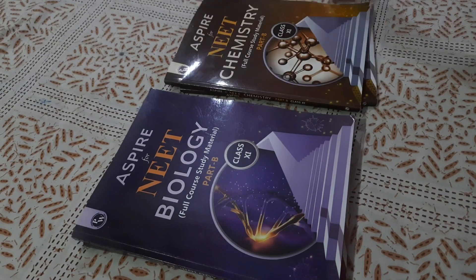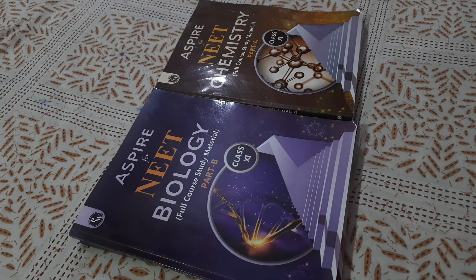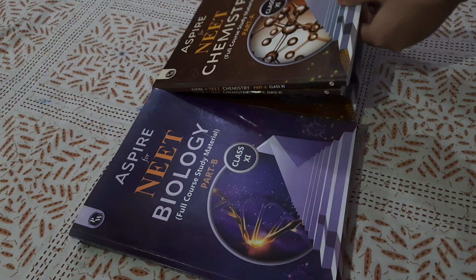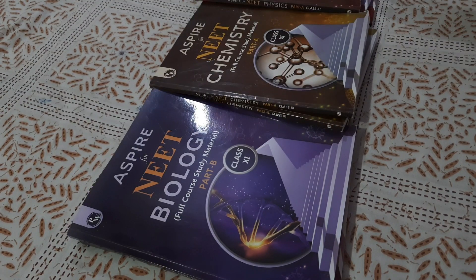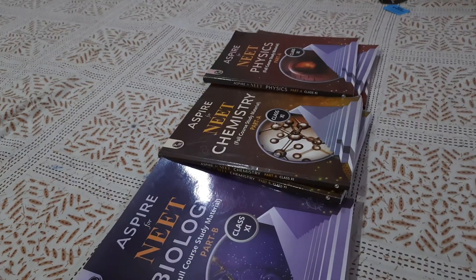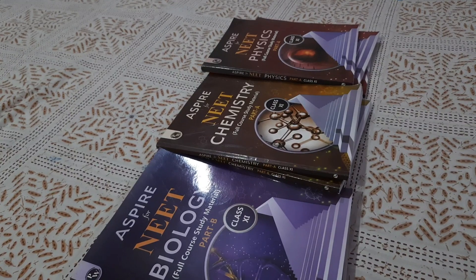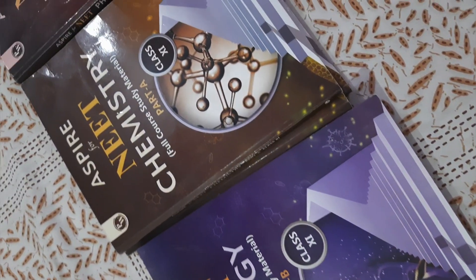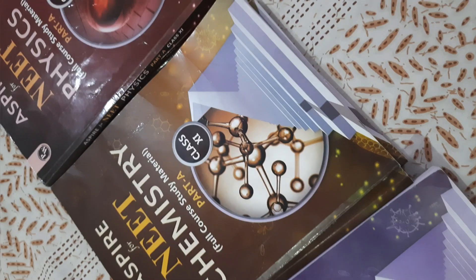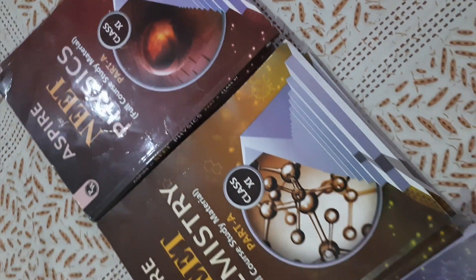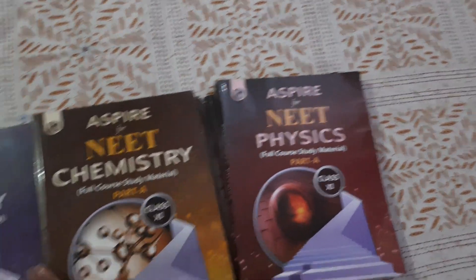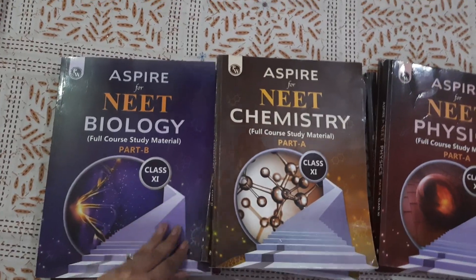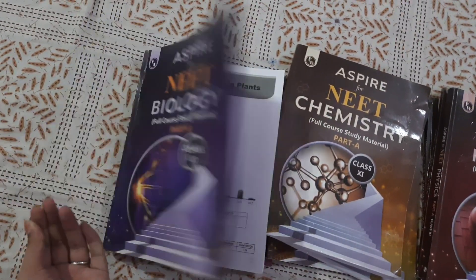Starting off with PW ki modules. As you can see, these are Arjuna ki modules for class 11th. In class 11th, I used PW ki modules when I purchased the batch. I used these modules along with another book which I will show you ahead. In 11th, we weren't that aware, so we were confused and trying to do everything at once. I was doing modules, DPPs, and one more book.